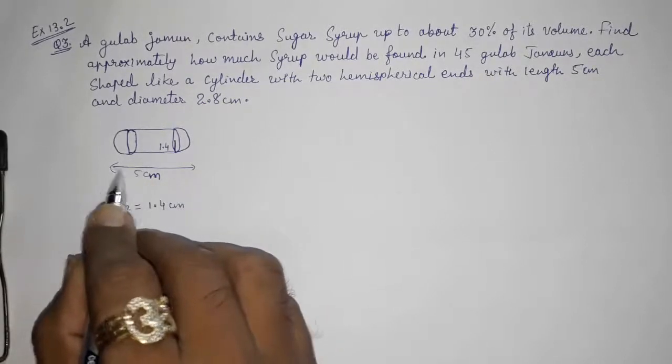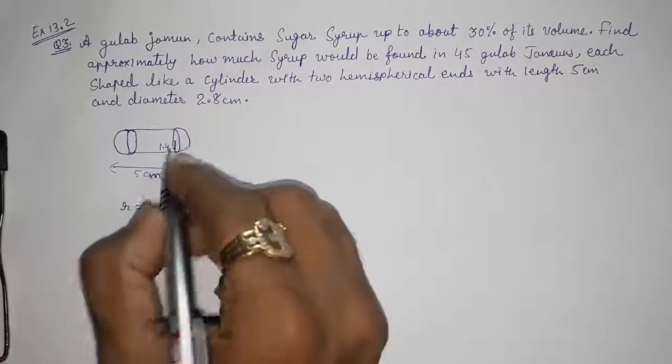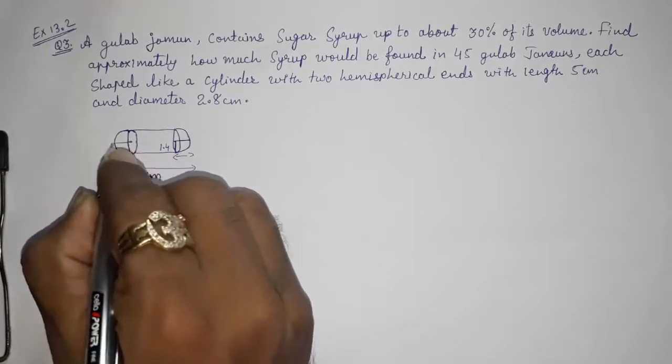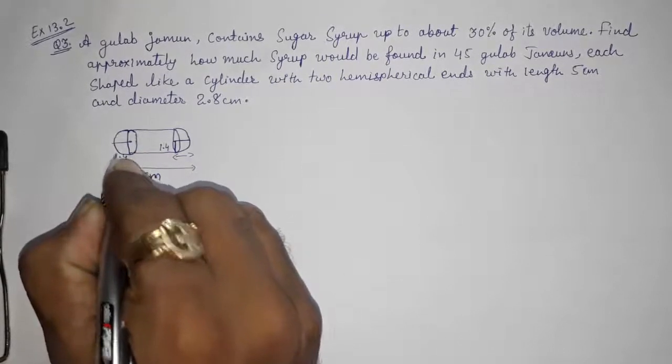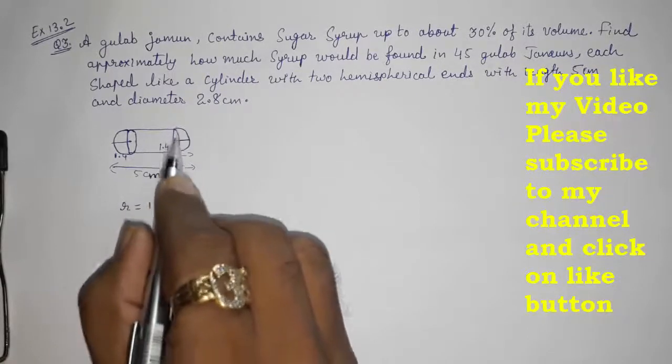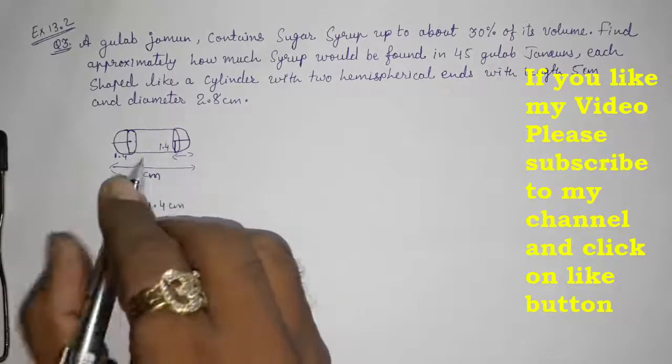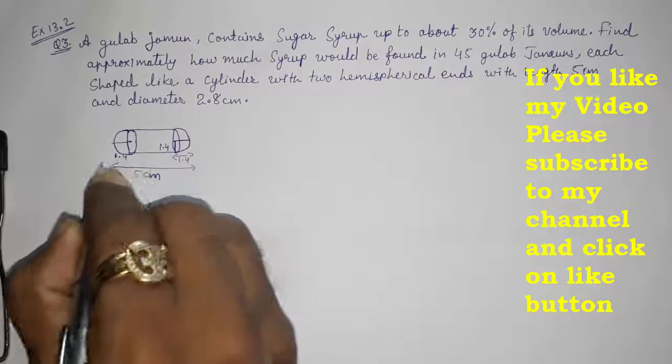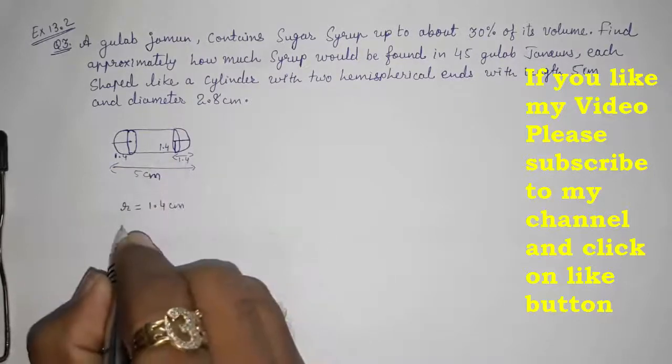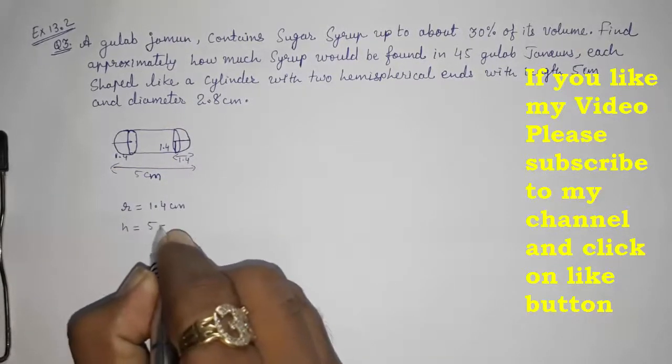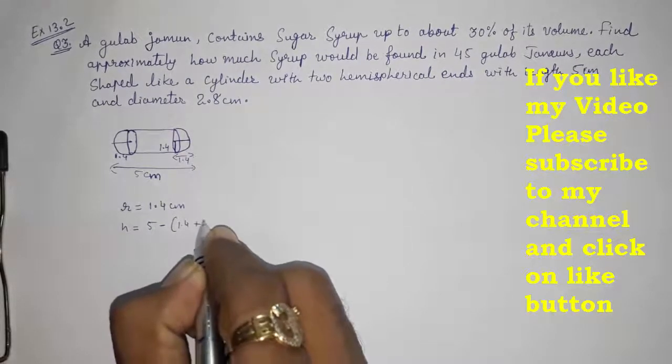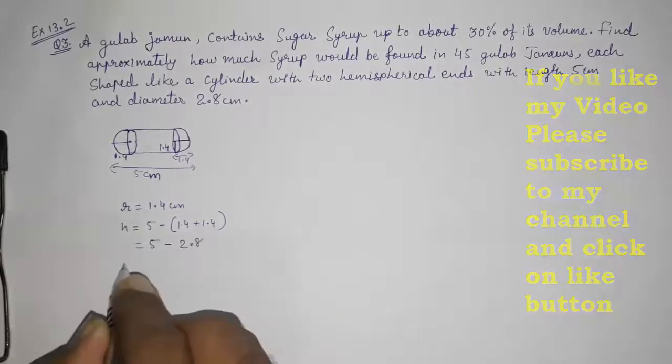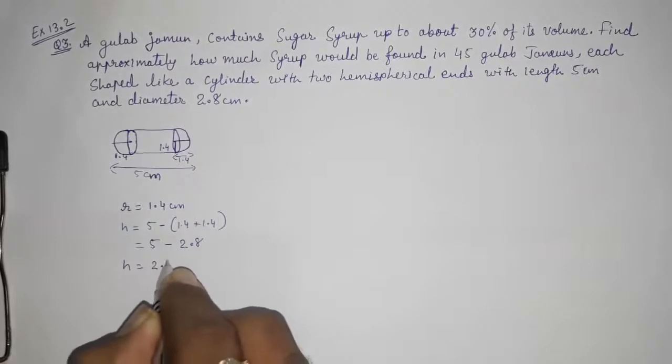Here they told us the total length of this is 5 cm. This length will be also 1.4 and this length will be also 1.4. We want to find the length of this cylinder or the height of the cylinder. That will be 5 minus 1.4 from this side, 1.4 from this side. So height will be 5 minus 1.4 plus 1.4, that will be 5 minus 2.8. Height will be equal to 2.2 cm.